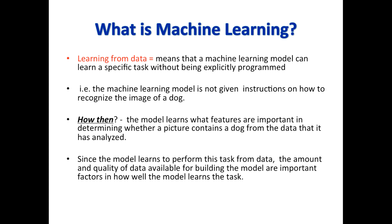What does learning from data mean? It means that a machine learning model can learn a specific task without being explicitly programmed — the model is not given instructions on how to recognize the image of a dog. Machine learning models learn what features are important in determining whether a picture contains a dog from the data that it has analyzed. Since machine learning models learn to perform tasks from data, the amount and quality of data available for building the model are important factors in how well the model learns.